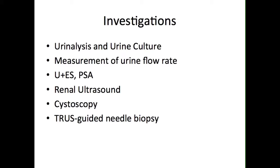Investigations for suspected BPH should include a midstream sample of urine for microscopy and culture, since a UTI may be a differential diagnosis as well as a potential complication of the urinary retention resulting from BPH. The rate of urine flow should also be quantitatively measured. Blood tests include urea and electrolytes to assess renal function, and serum PSA if prostate cancer is suspected.